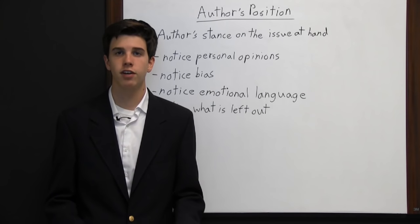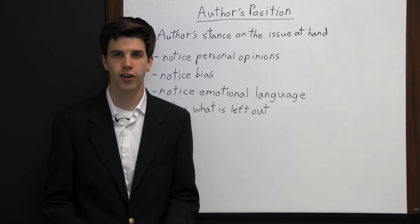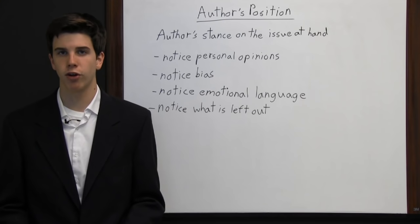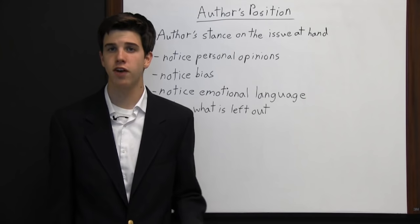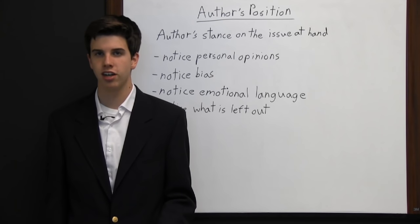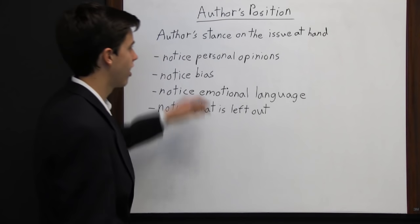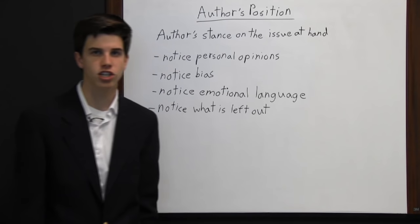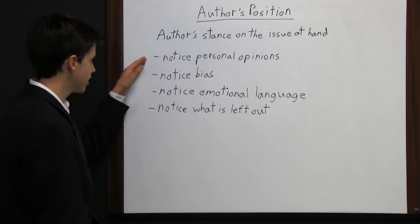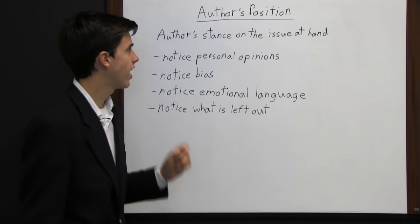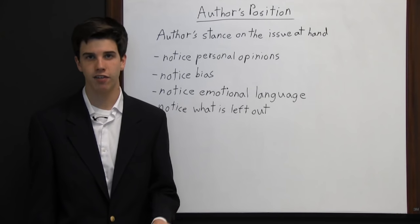Noticing an author's position is very vital to understanding a piece of writing because every writer is going to have a personal bias or a certain position on whatever they're writing about. The way they portray something may not be totally accurate. The author's position is basically their stance on the issue at hand — what they believe about the issue they are writing about. To find it, you as the reader are going to have to be proactive and notice certain things.